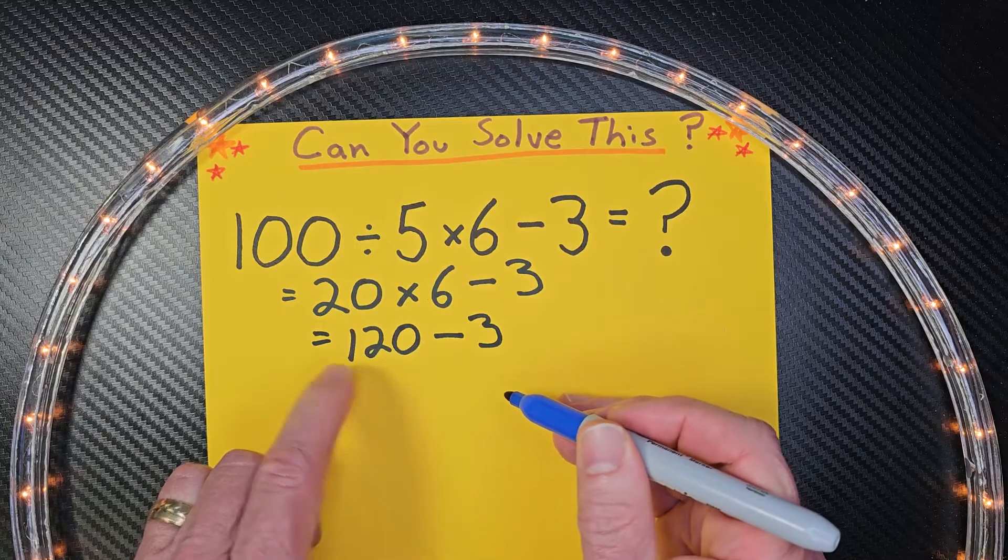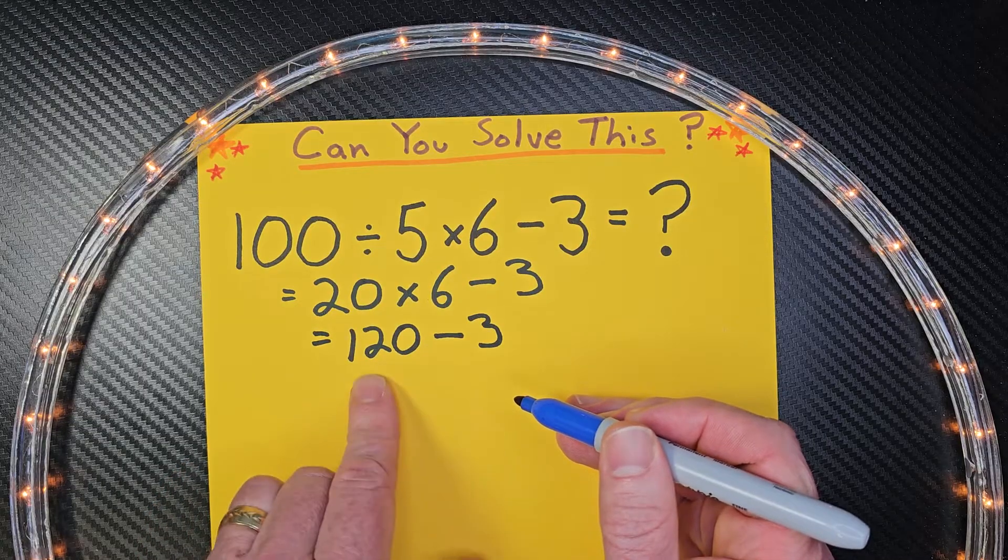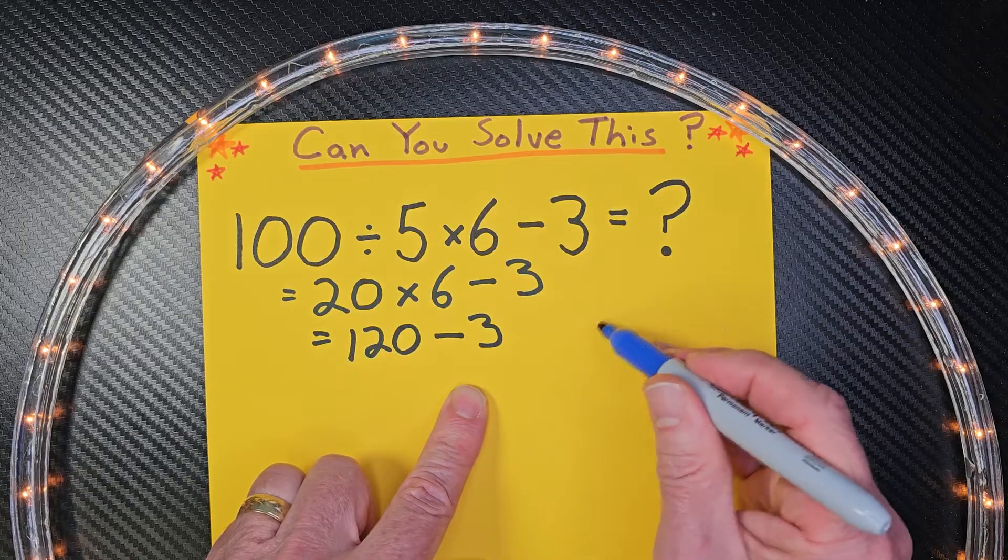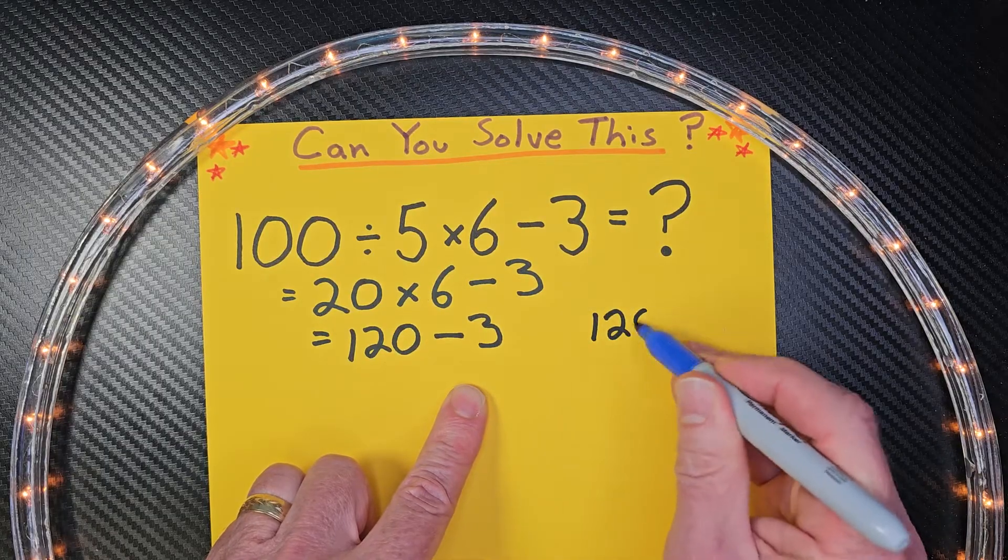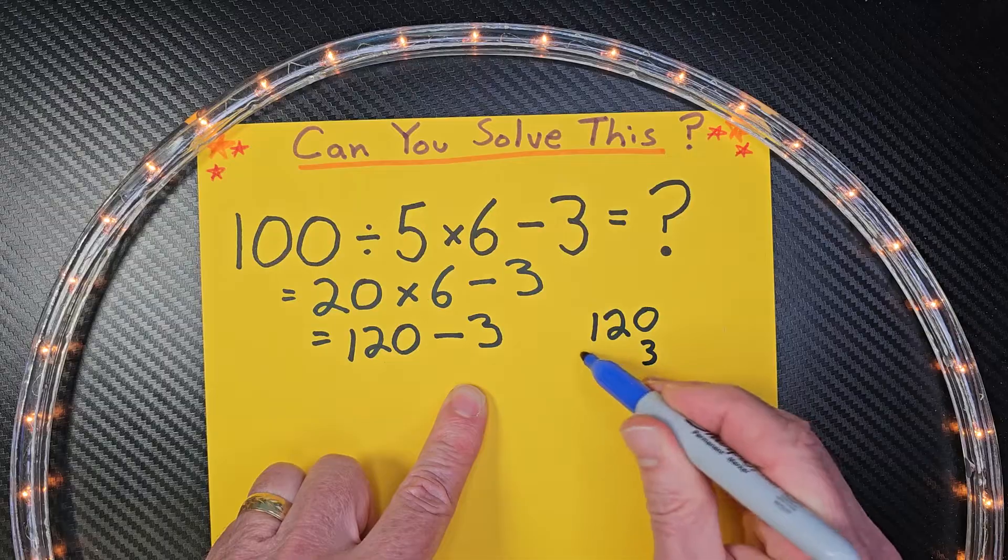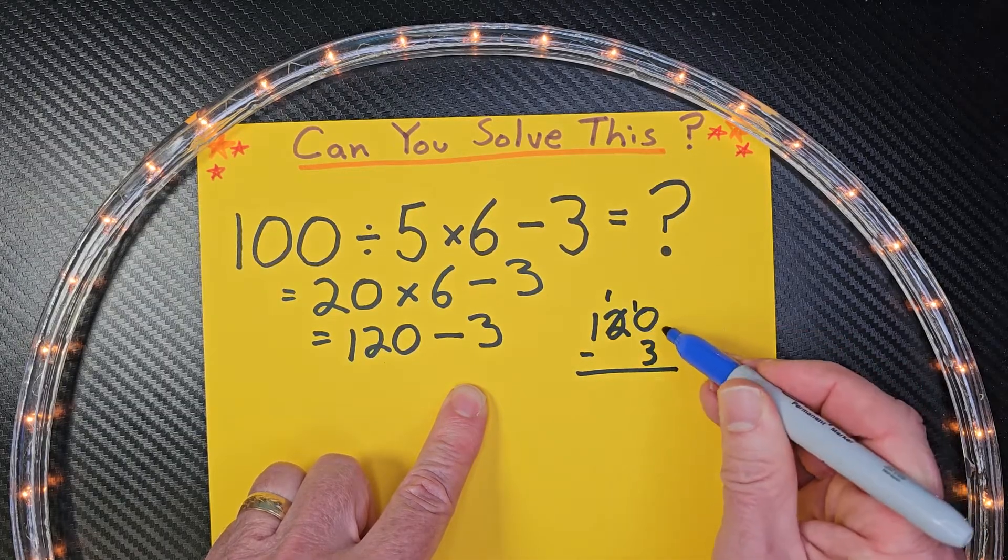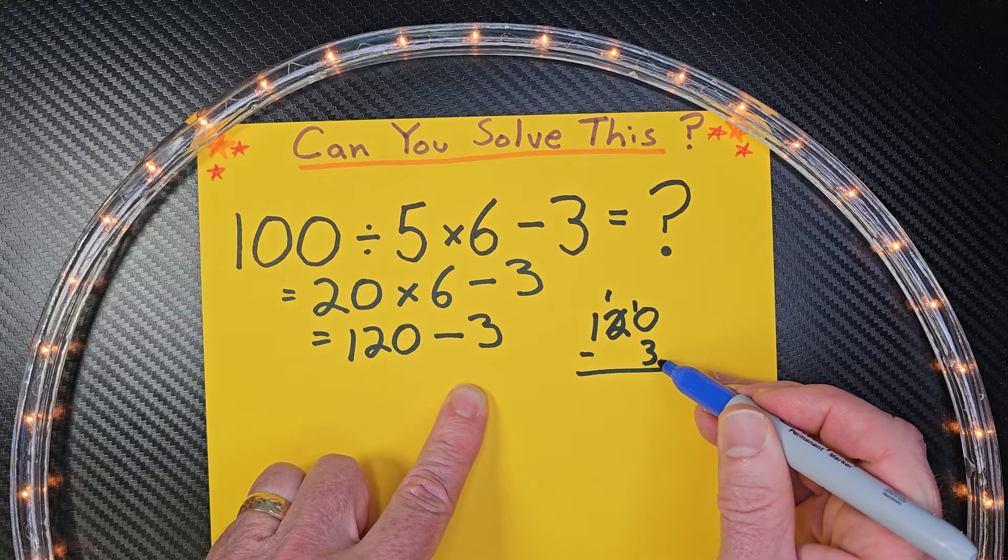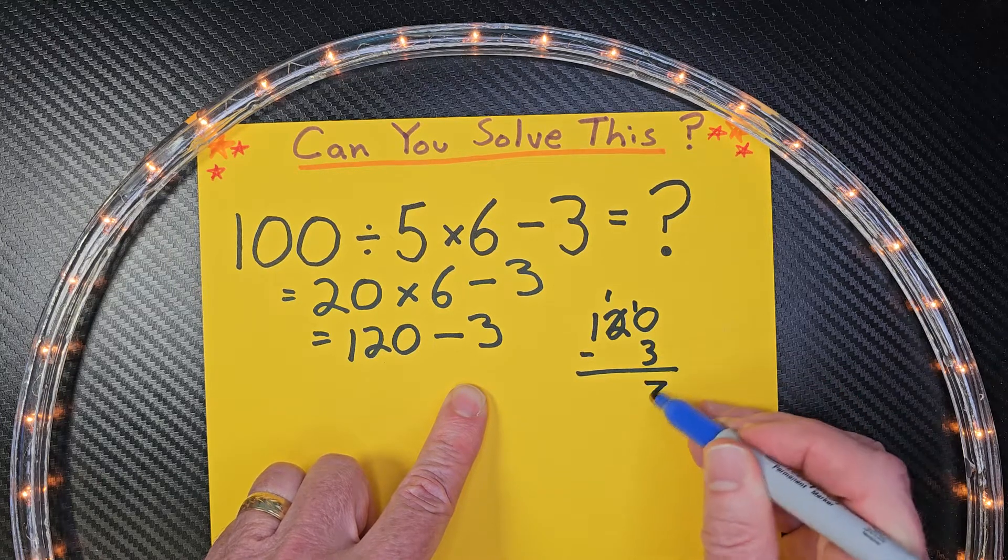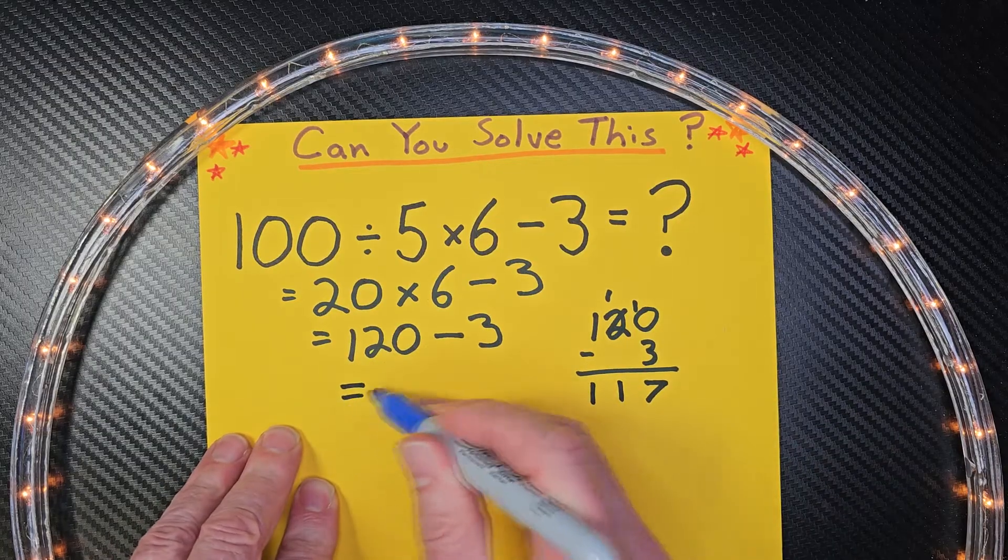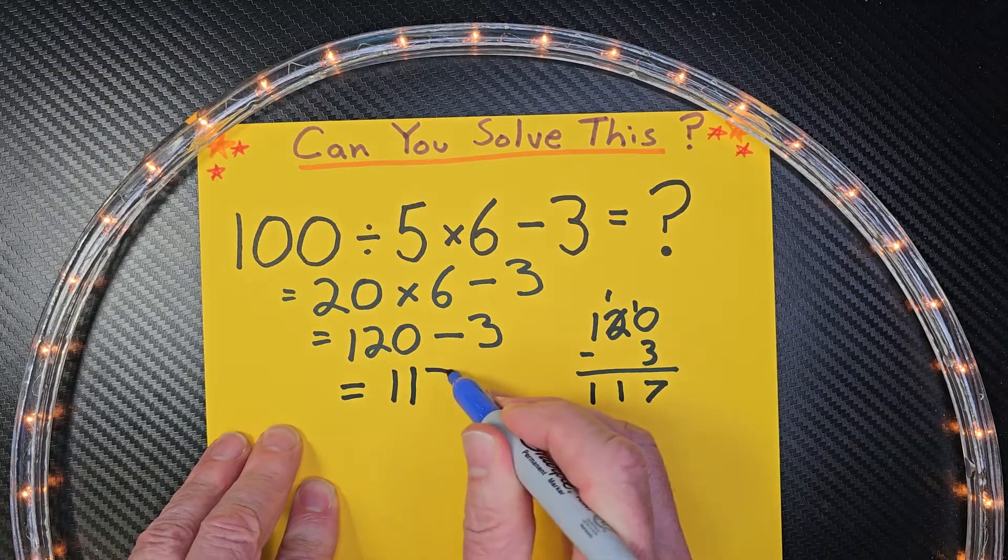Alright, now all we have to do is do 120 minus 3. If you're not familiar how to do that, you can always write it out longhand. We put a subtraction here. Need to borrow from this one here. This will be 10. So 10 minus 3 would be 7. 7, 8, 9, 10. And then just drop these numbers down. So our answer is 117.